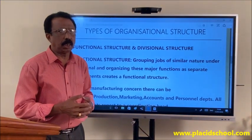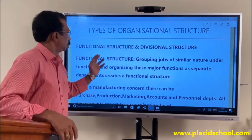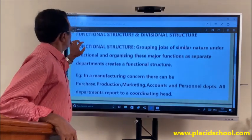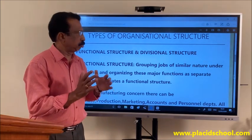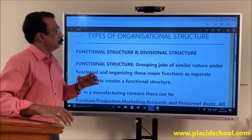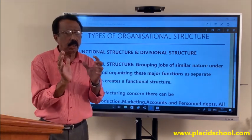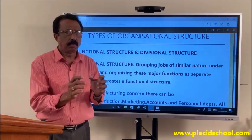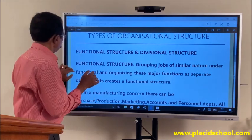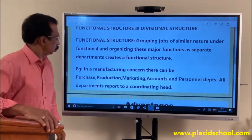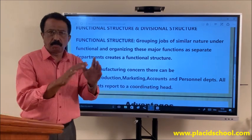The span of management determines the organizational structure. The organizational structure can be functional or divisional. Functional structure means grouping jobs of similar nature under a function and organizing these major functions into separated departments, which creates a functional structure. For example, in a manufacturing concern there can be Purchase, Production, Marketing, Accounts, and Personnel departments — all departments report to a coordinating head.